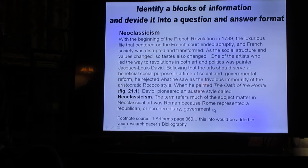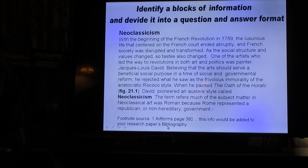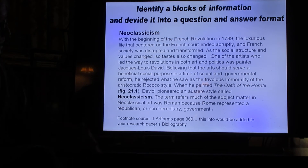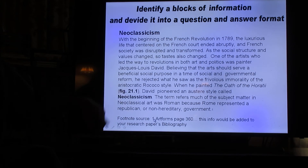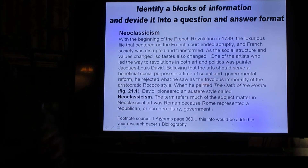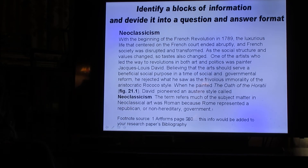Notice that I put a footnote here — number one, footnote source one, Art Forms, page 360. This info would be added to your research paper and its bibliography. You're going to have a bibliography at the end of your research paper where you can list all your resources, because you don't want to keep putting down Art Forms all the time. You put it once at the end and it references the page number and the source.